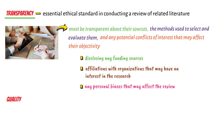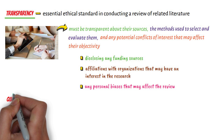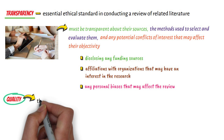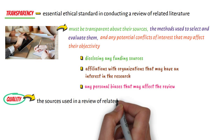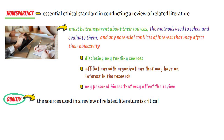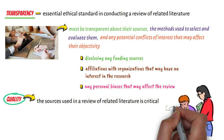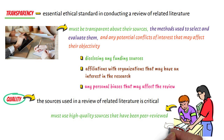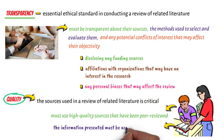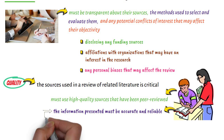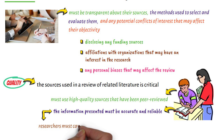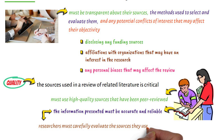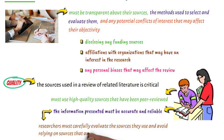Third, quality. The quality of the sources used in a review of related literature is critical. Researchers must use high-quality sources that have been peer-reviewed, and the information presented must be accurate and reliable. This means that researchers must carefully evaluate the sources they use and avoid relying on sources that are biased, outdated, or unreliable.